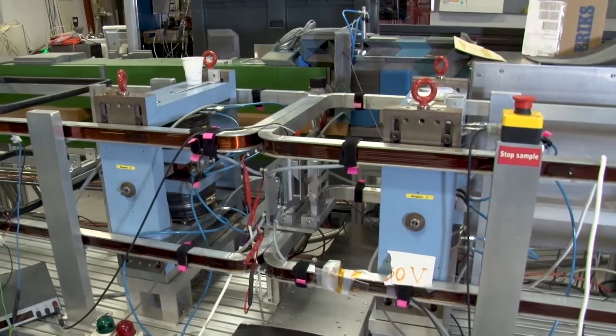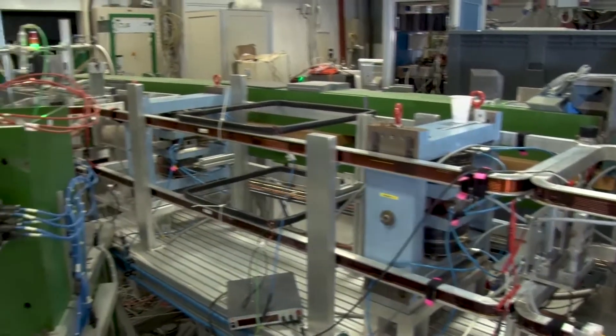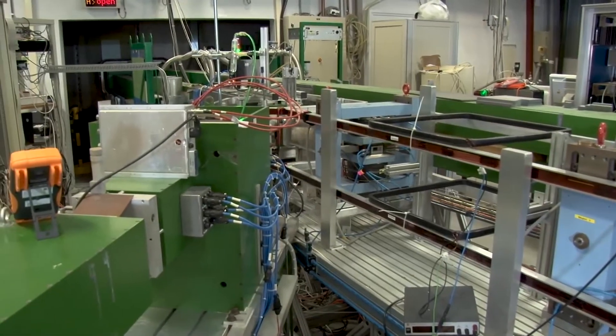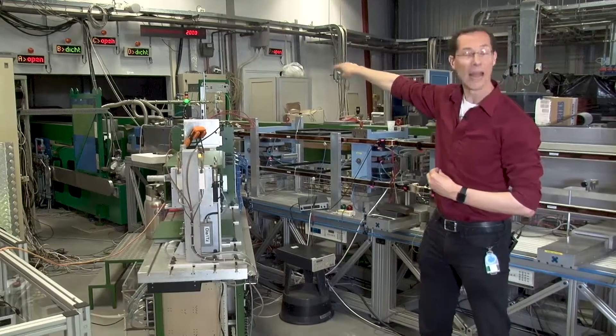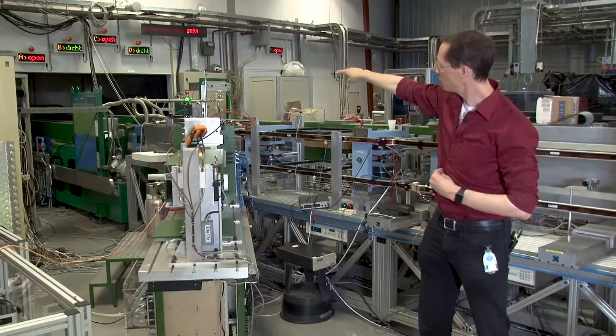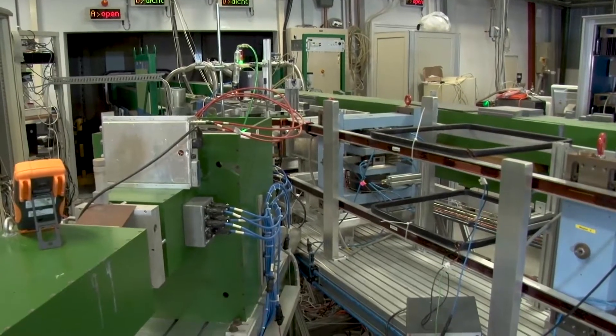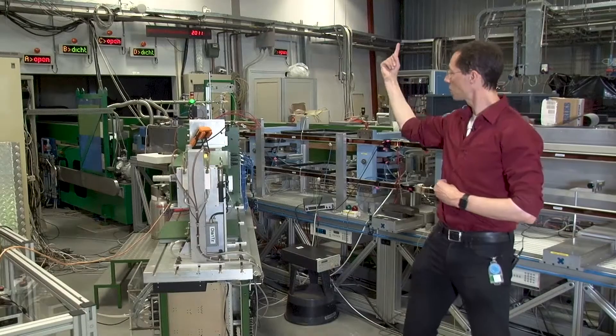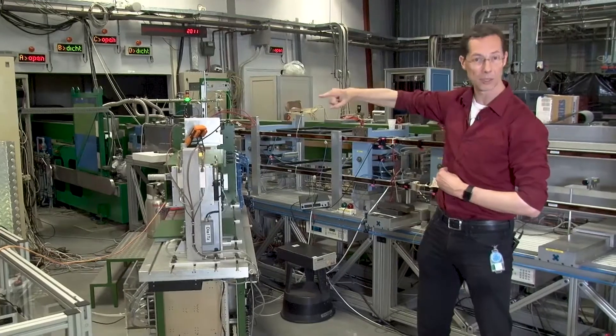So this here is a nice model for the Larmor precession that we have of the polarized neutrons in the magnetic field. With this instrument, we have the neutrons coming in from the reactor, and then they enter the LED box you see. It's a polarization filter, and then the neutrons are turned and they end up in this direction.